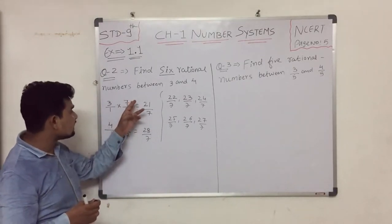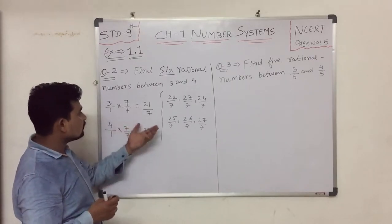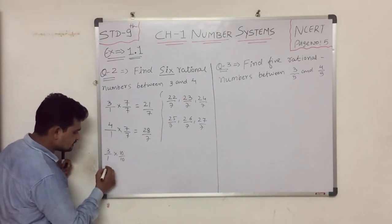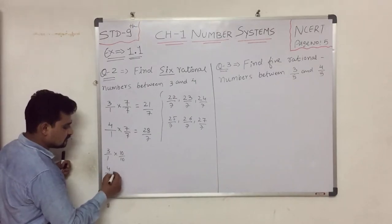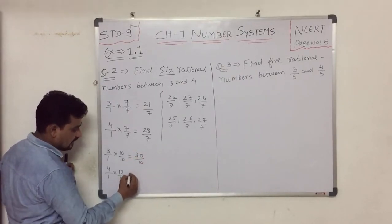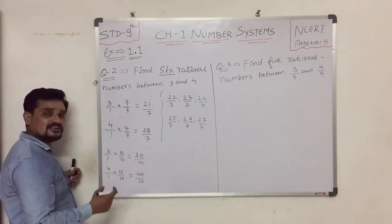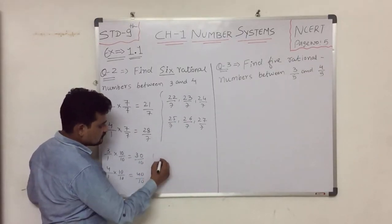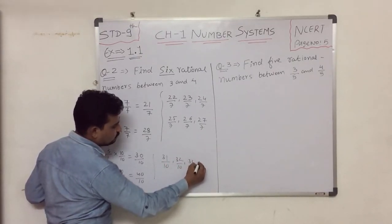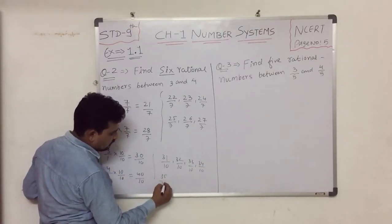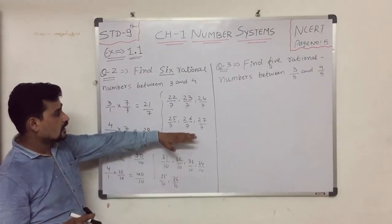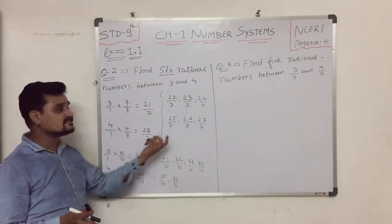Alternatively, we can multiply the numerator and denominator by 10. So 3 becomes 30/10 and 4 becomes 40/10. Between these, we can write: 31/10, 32/10, 33/10, 34/10, 35/10, and 36/10. These are also 6 rational numbers between 3 and 4.